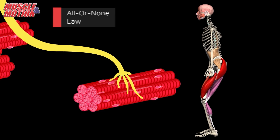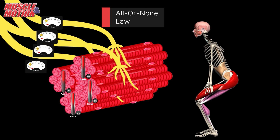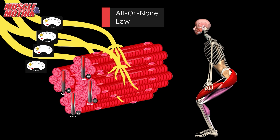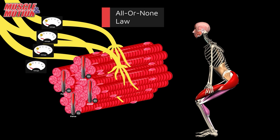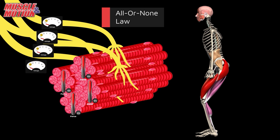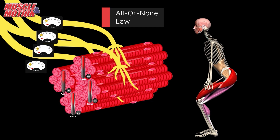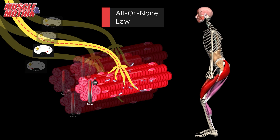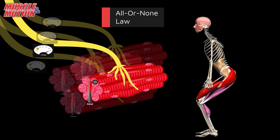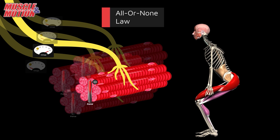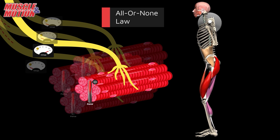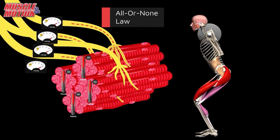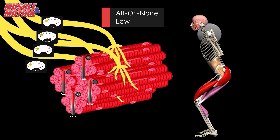However, the muscle can regulate its strength by activating only the required number of motor units needed for a specific action. For example, if a trainee performs squats without additional weight, a small number of motor units will be recruited. But when a trainee does the squat with heavy weights, more motor units will be required to complete the exercise.